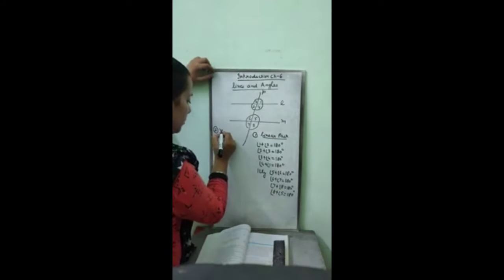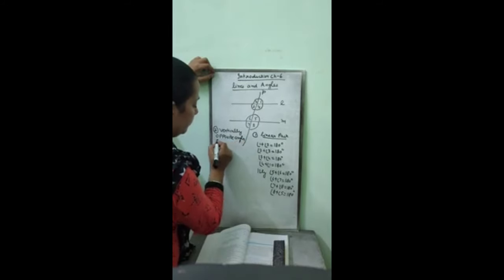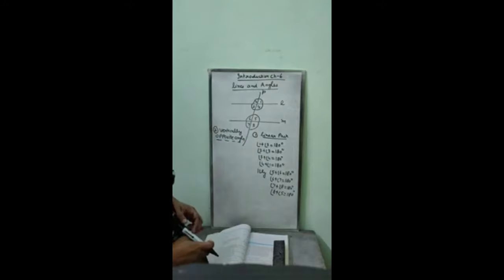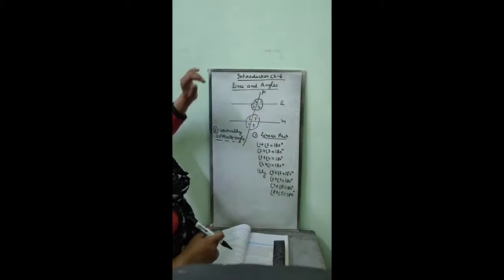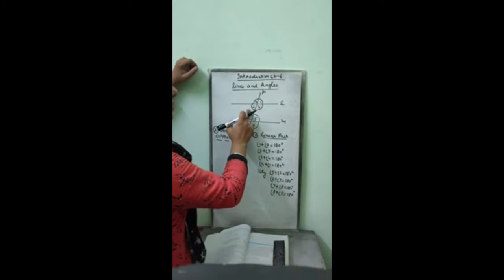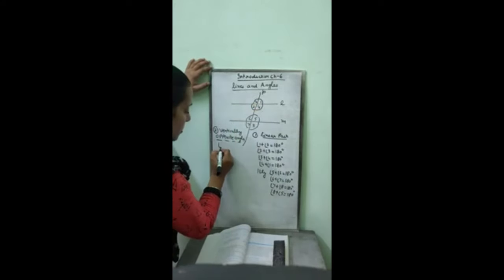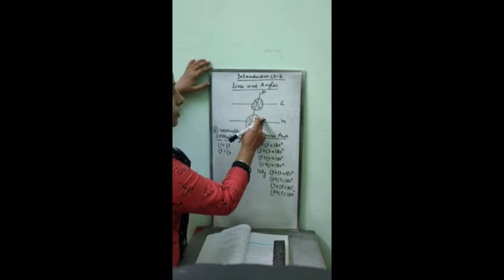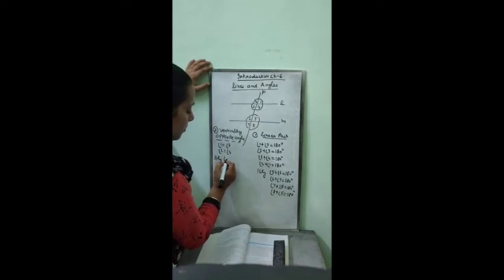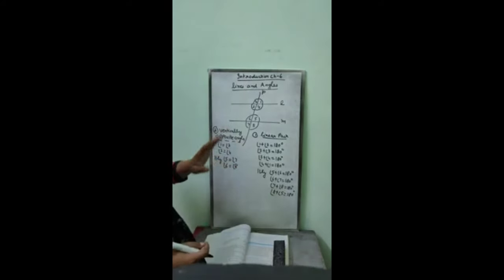Second: vertically opposite angles. What are vertically opposite angles? When two lines intersect each other, the cross angles which they are making with each other are called vertically opposite angles. In this group, angle 1 and 3 are vertically opposite. Angle 2 and 4 are vertically opposite. Vertically opposite angles are equal: 1 and 3, 2 and 4. In this group, 5 and 7, 6 and 8 are vertically opposite. This is the second relation of angles.